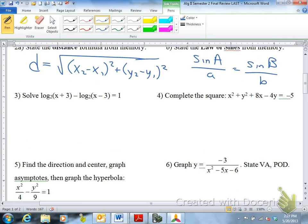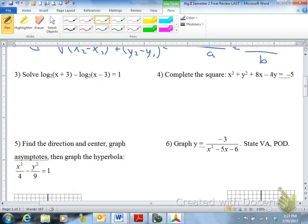Commonly missed question. Number three is a commonly missed question on the final exam. So to condense, you'd have log 2, and this difference is going to become a division. So you'd have x plus 3 divided by x minus 3 equals 1.